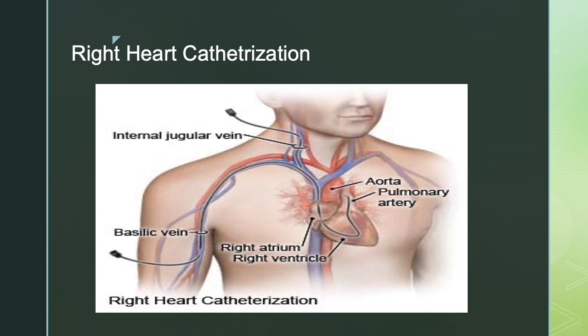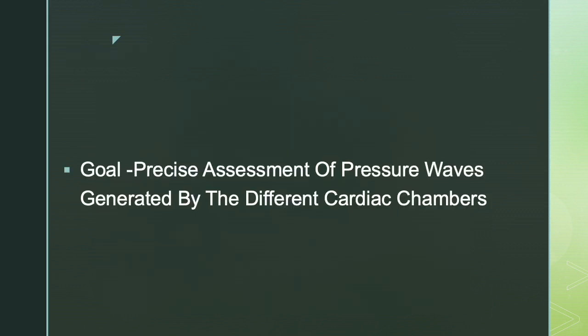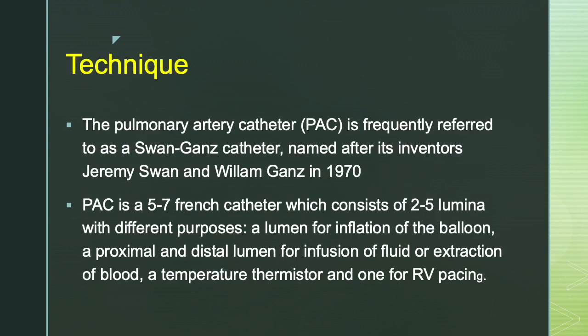Right heart catheterization involves catheterization of the right side of the heart. It is similar to placing a central venous catheter — the methodology and the access site are alike. You can also access it like a PICC line through the basilic vein, or through the internal jugular vein. A catheter is placed in the right heart and wedged into the pulmonary artery. The goal is to measure pressure waves as they are generated by the different cardiac chambers, and estimate changes in pressure from those readings.